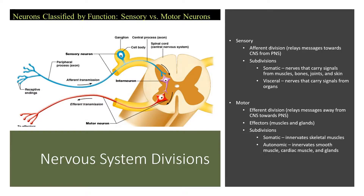Now, there are two divisions of the nervous system. There is the sensory division, also known as the afferent division. Afferent just means carrying something towards something else. For instance, afferent bronchial arteries in a shark carry deoxygenated blood towards the gills. So afferent means towards something, and the afferent division relays messages towards the central nervous system from the peripheral nervous system.